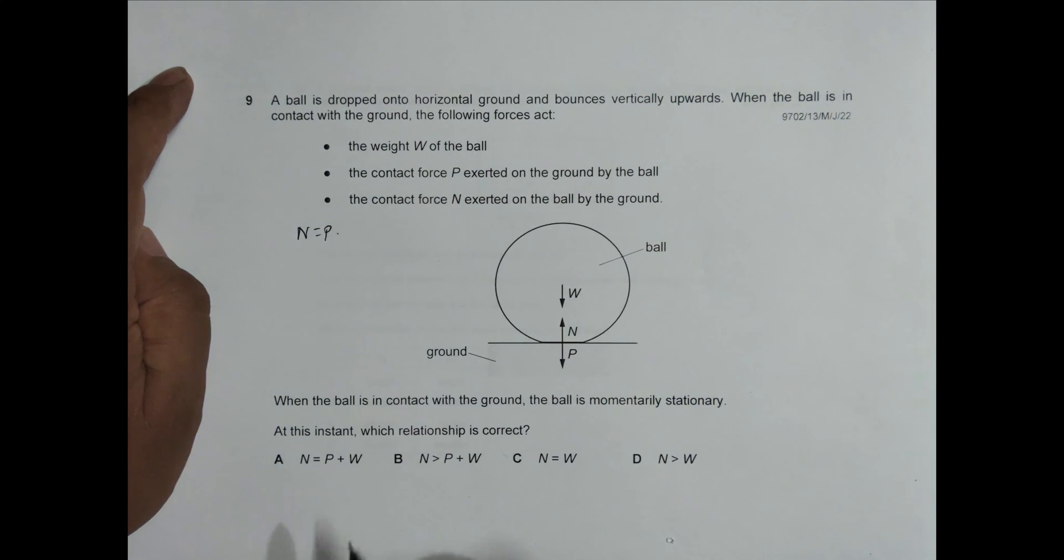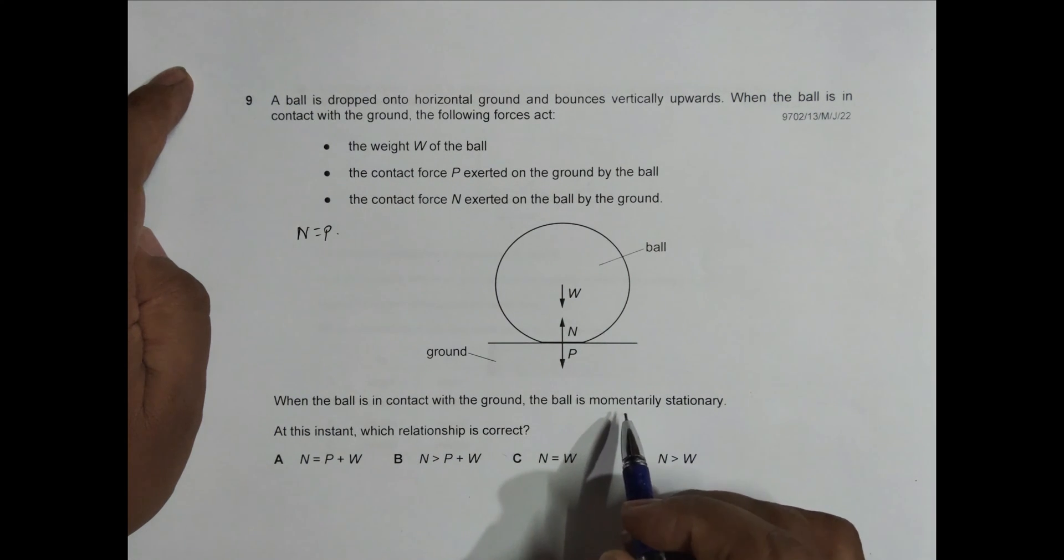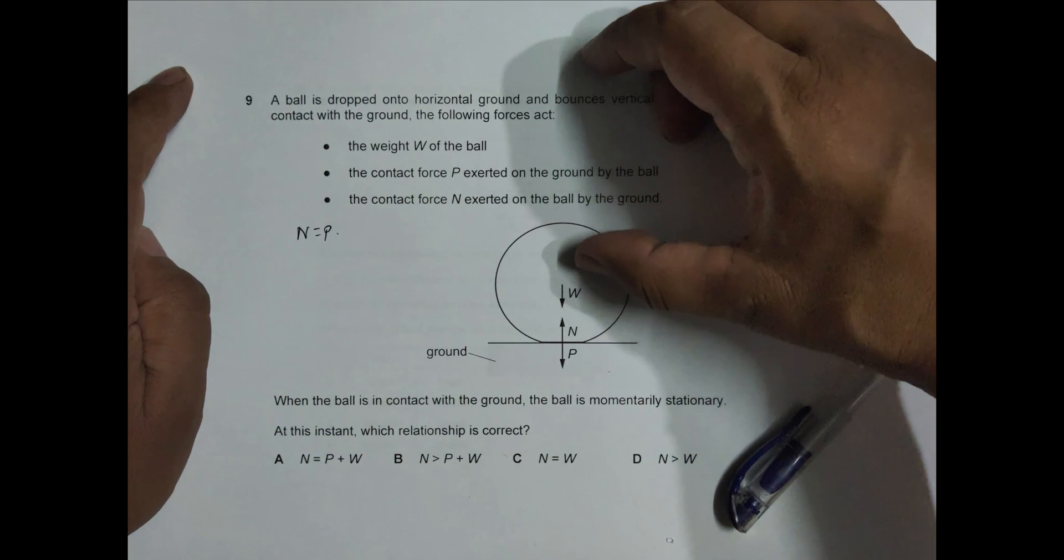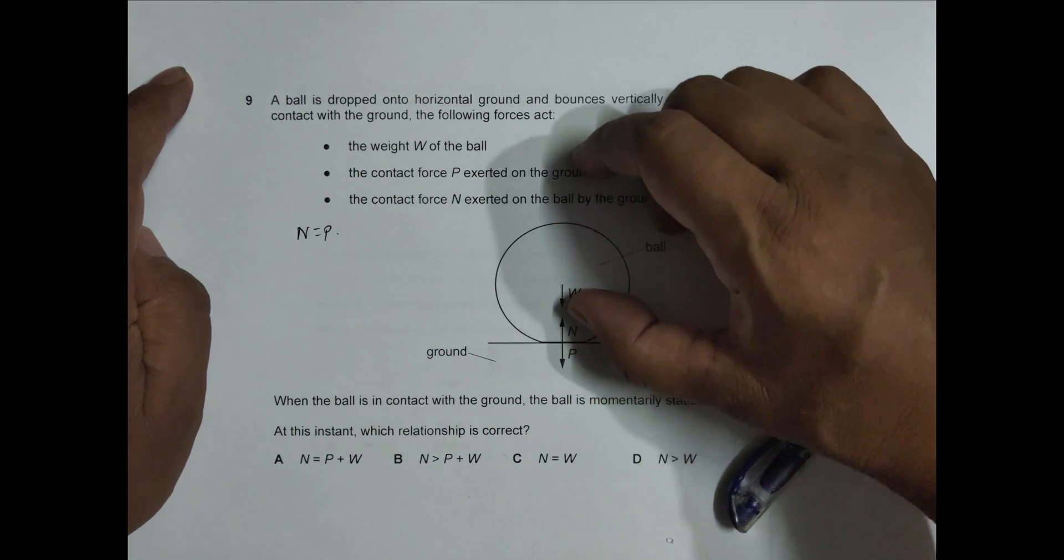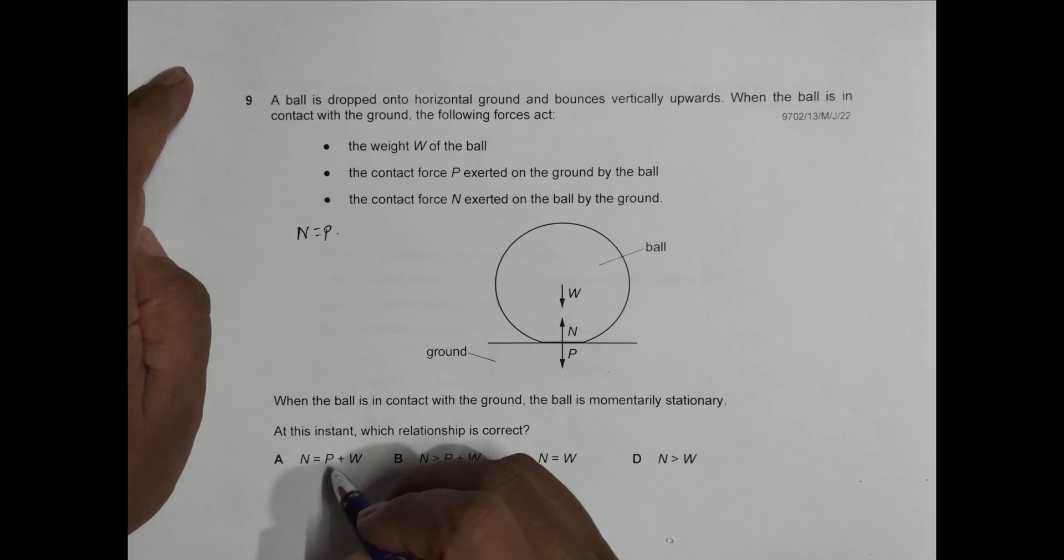Now when the ball is in contact with the ground, the ball is momentarily stationary. So it comes down like this, stationary, and then it rises like this. So at this instant, which relationship is correct? You have to find which relationship is correct.